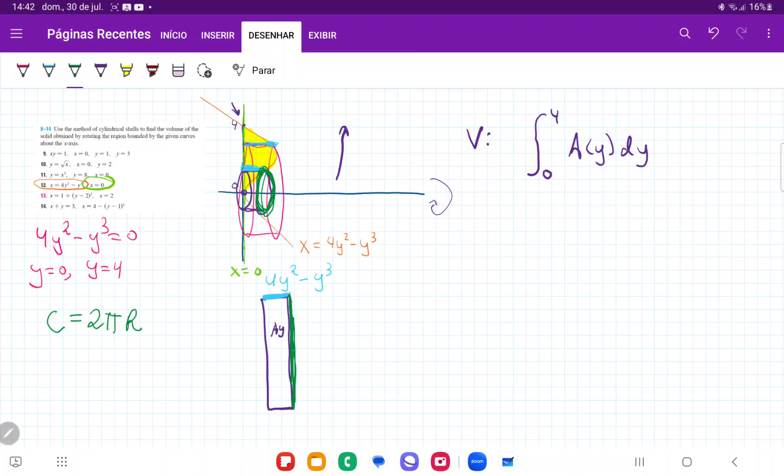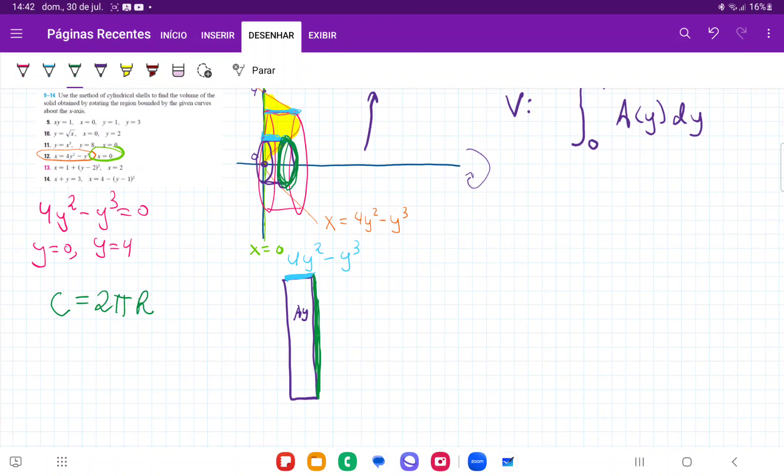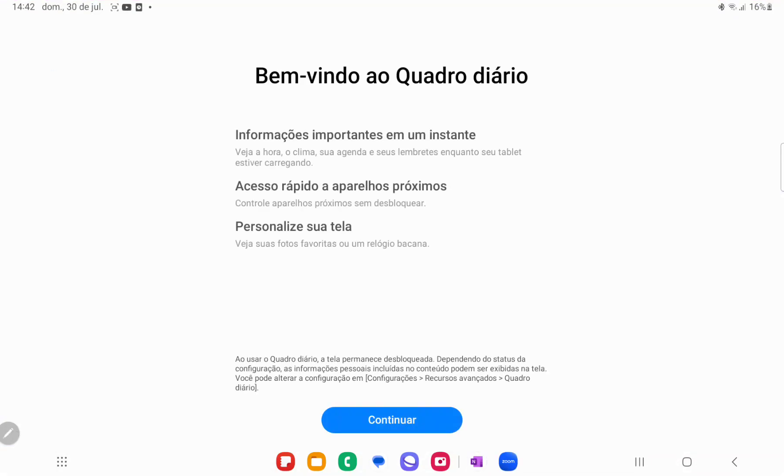And now a circle is given by 2 pi r, the circumference of it rather. And now we just have to think about how to express the circumference as a function of y, because it definitely does change as we move along the y-axis.